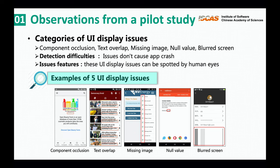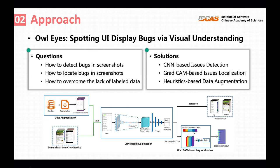Inspired by the fact that these UI display issues can be spotted by human eyes, we propose to identify these issues with visual understanding, which emulates the human visual system. As UI screenshots are easy to fetch and show no significant difference across applications from different platforms and devices, our image-based approach is more flexible and easy to deploy. We propose a tool called All-Eyes, which uses CNN to detect the issues.